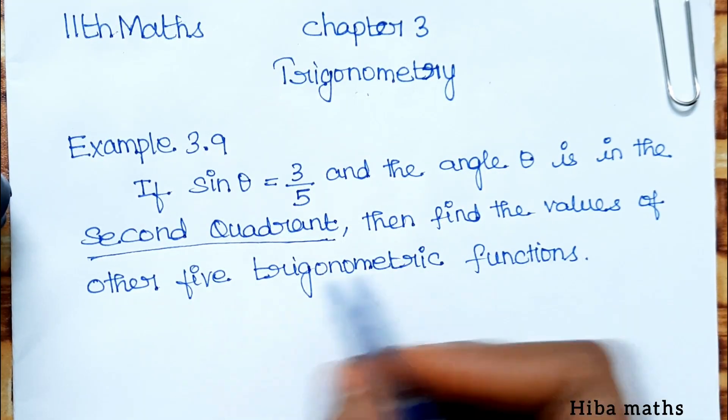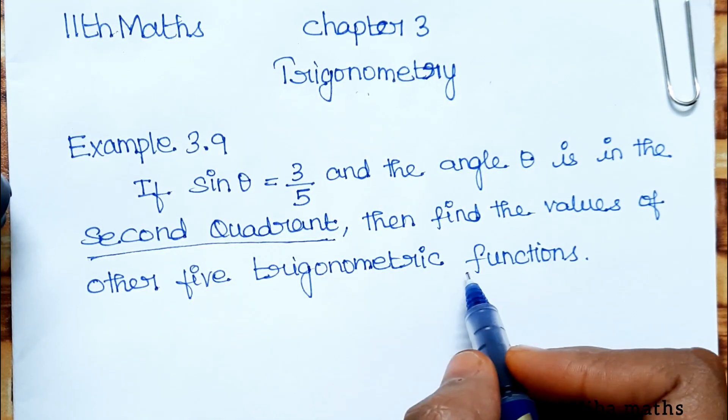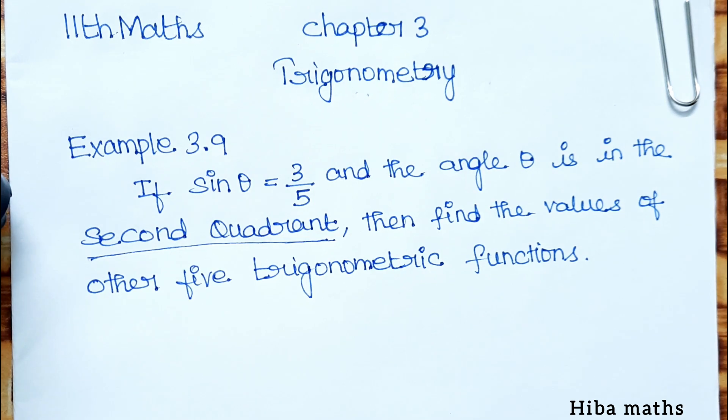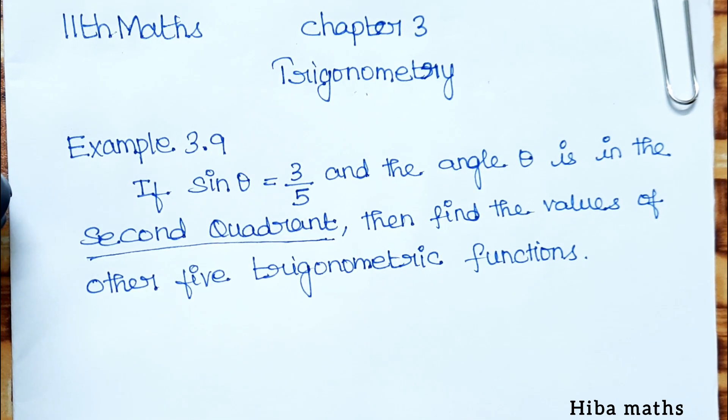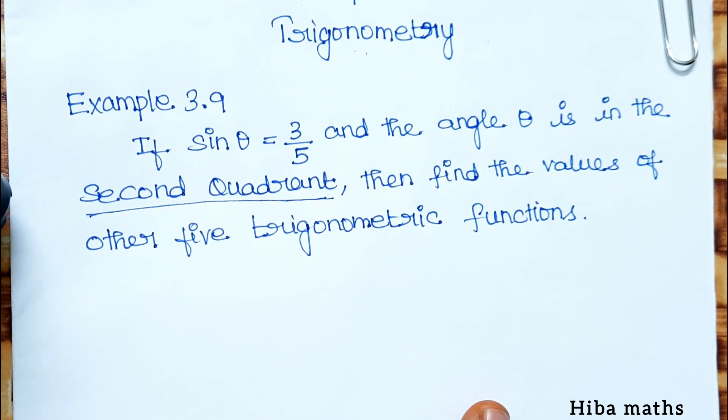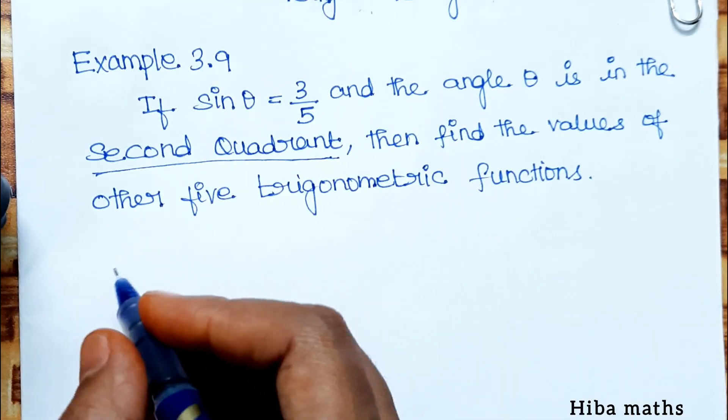Then find the values of other five trigonometric functions. So, sin θ equals 3 by 5, let's solve it.